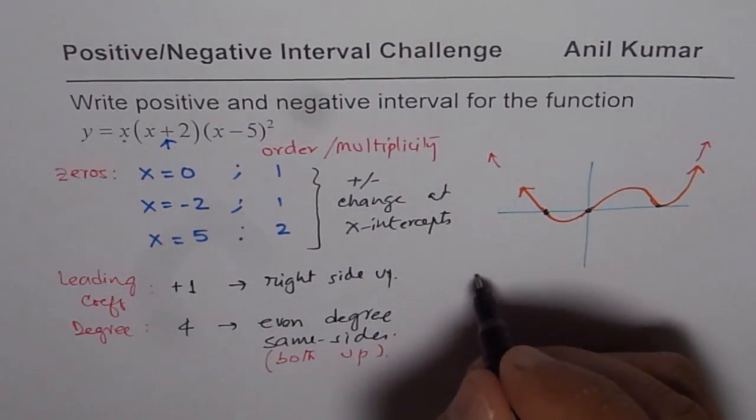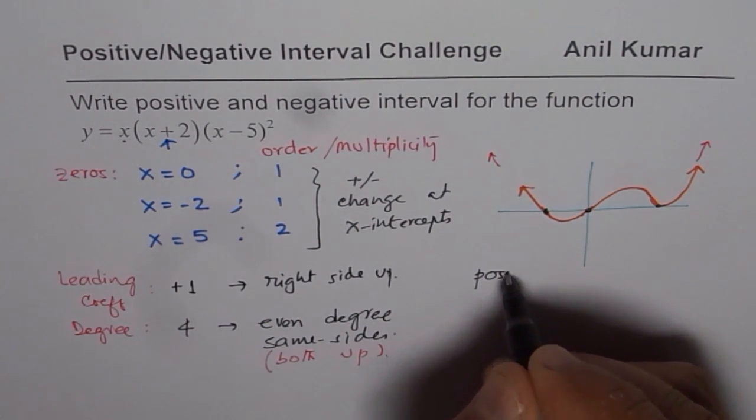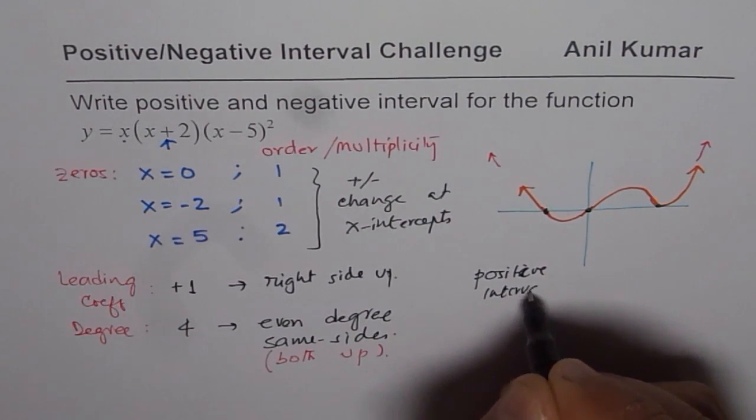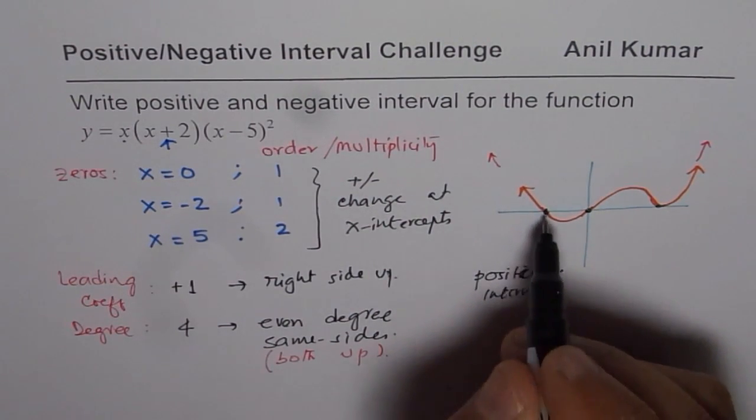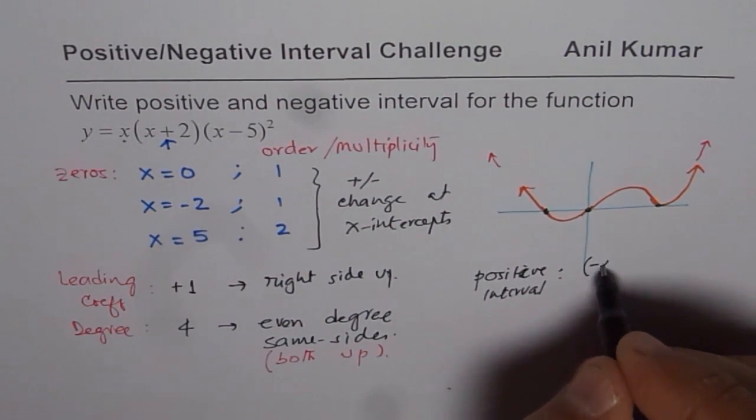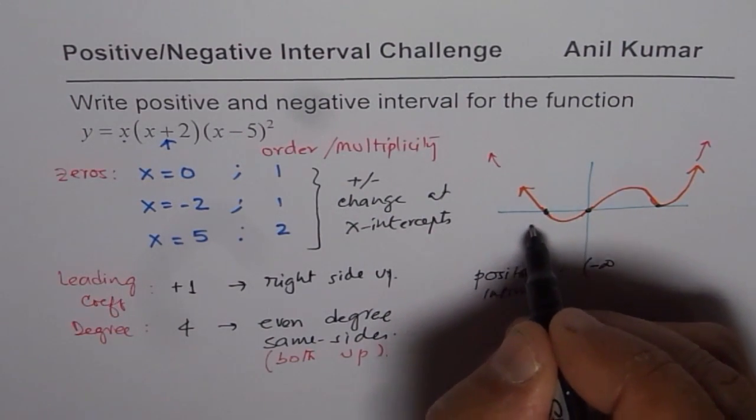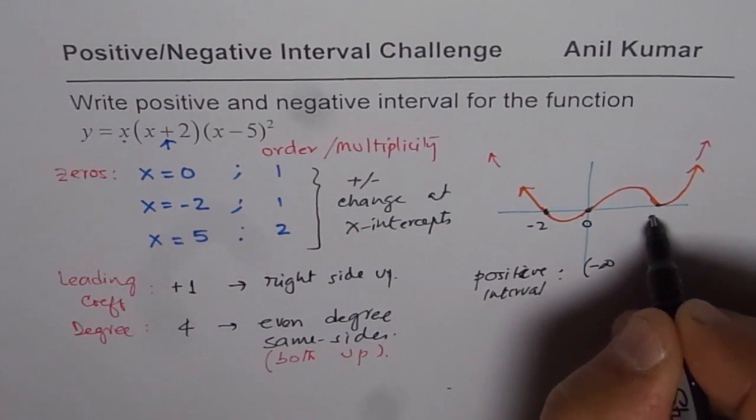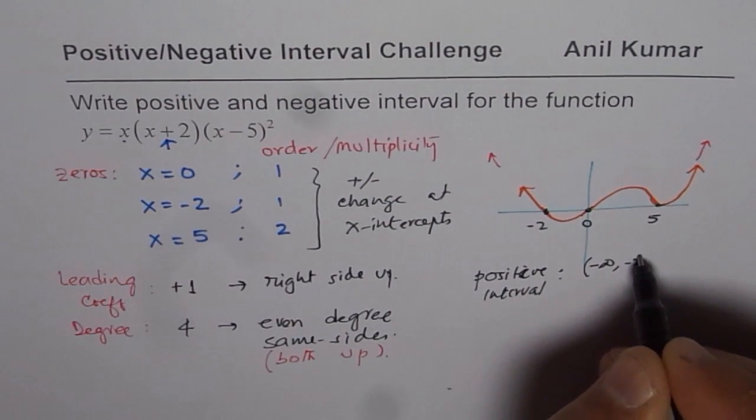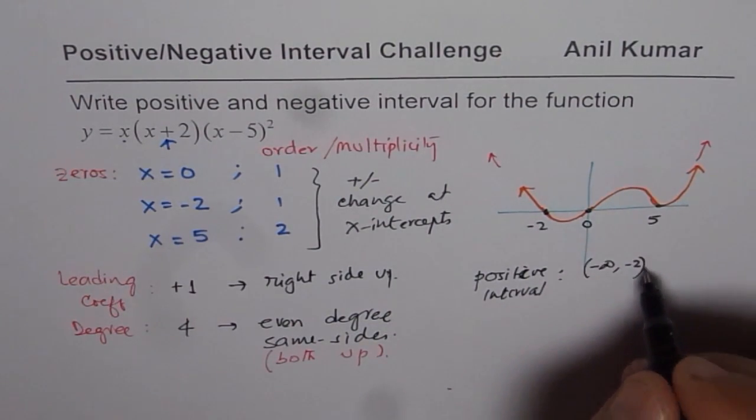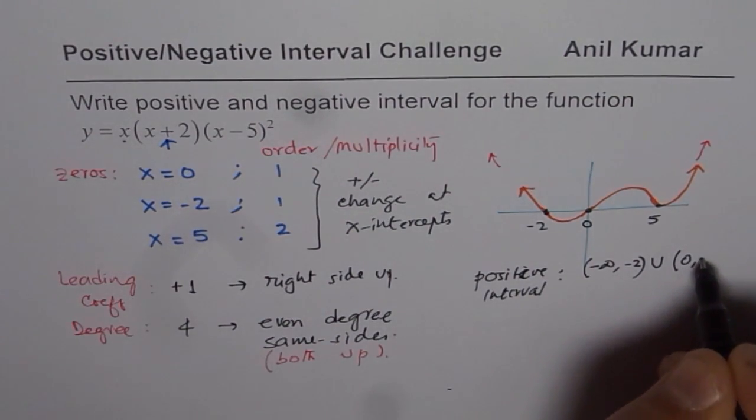So let's write down the answer now. We say positive interval is when we are from minus infinity to this point, which is minus 2. This is 0 and 5. So minus 2. And then it is positive from 0 to 5. So we could write union, 0 to 5.